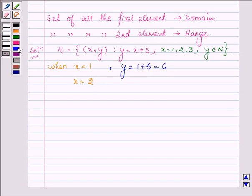Y will take the value 2 plus 5 which is equal to 7 and when X is equal to 3, Y will be equal to 3 plus 5 that is 8.